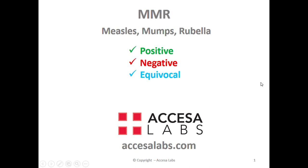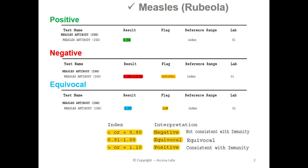If you want to learn more about MMR titer testing, you have come to the right place. We are titer test experts. Let's review a few AccessaLab sample reports to help you learn how to interpret the measles, also known as rubeola, titer results. Most schools and workplaces want to see a quantitative or numerical result, which can be found under the result header on the sample report.